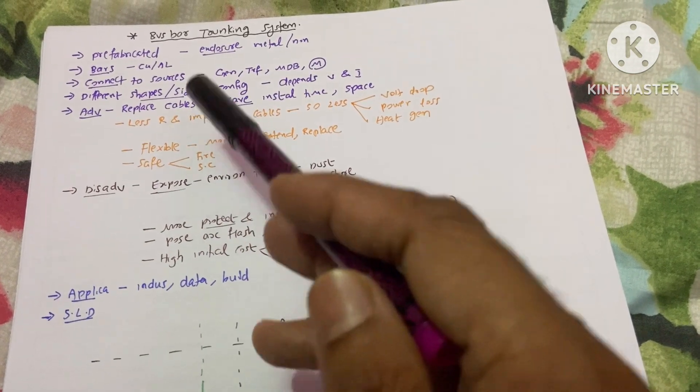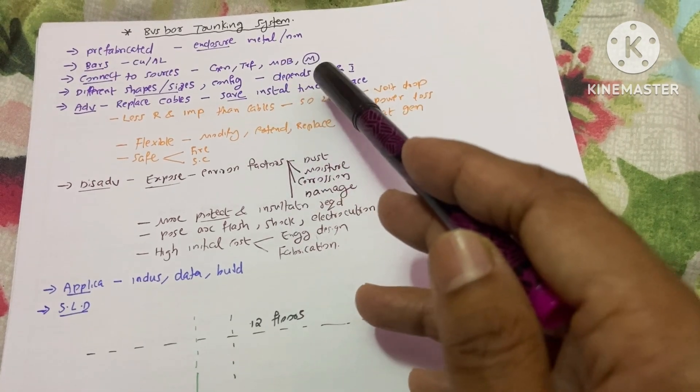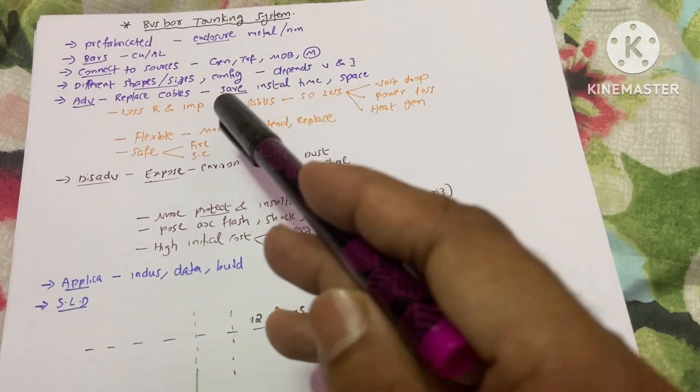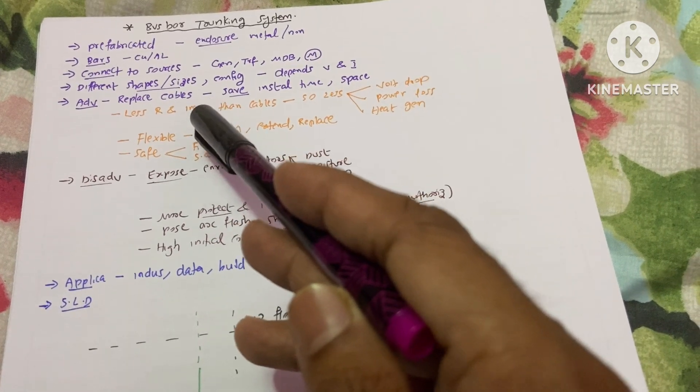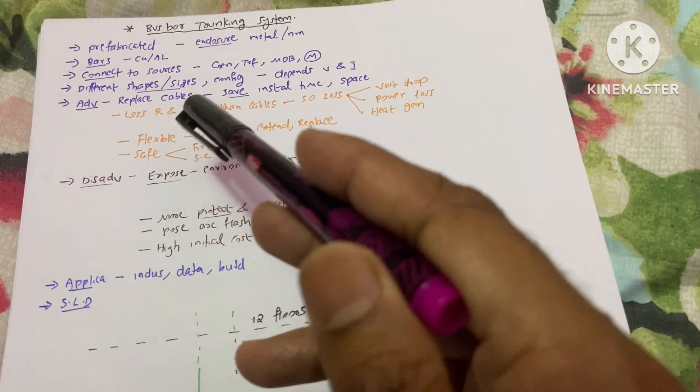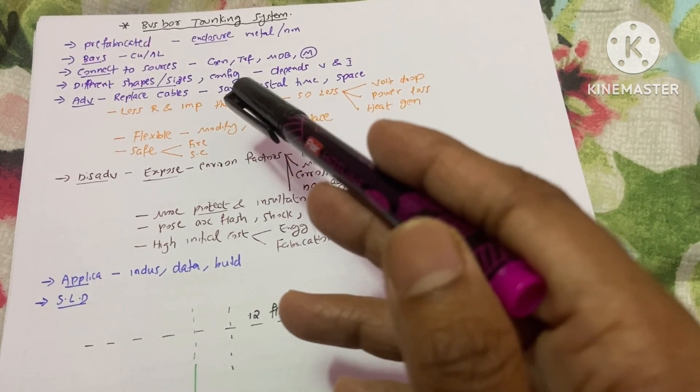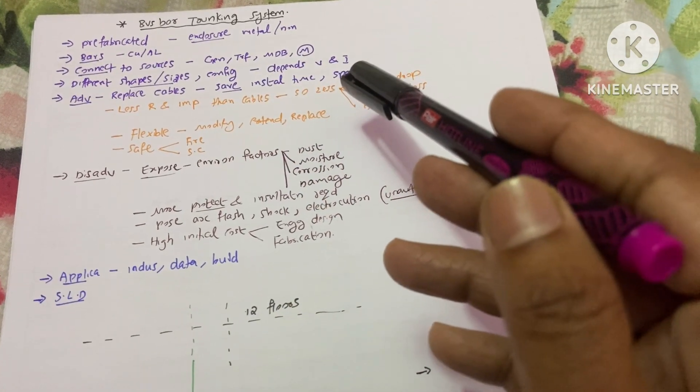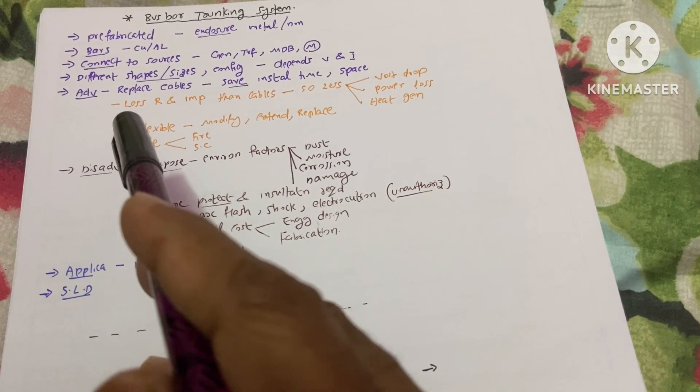For example, generator, transformer, MDB, motor, etc. There are different shapes and sizes of this trunking system, and also different configurations. All these depend upon the voltage and current of your system.